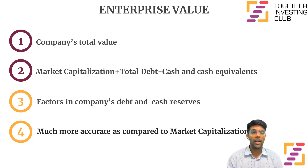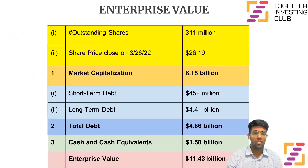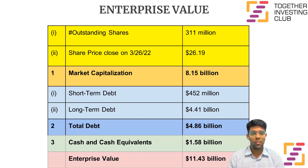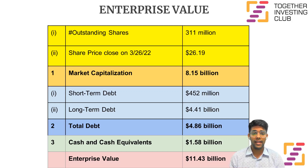Let's look at an example to calculate enterprise value for a company. Here we have the outstanding shares of the company at $311 million. The last trading price of the company on 26 March is $26.19. The market cap comes out to be outstanding shares into the share price, which is $8.15 billion. The short-term debt of this company is $452 million while the long-term debt is $4.41 billion, so the total debt comes out to be $4.86 billion, while the cash and cash equivalents are $1.58 billion.